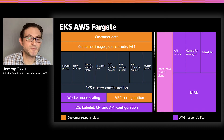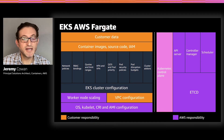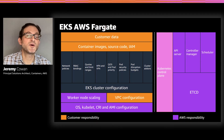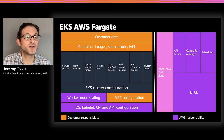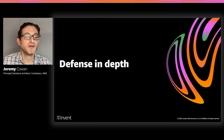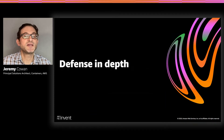With Fargate, the concept of a node is abstracted away, and AWS becomes responsible for managing and scaling the infrastructure to run your containerized applications. Now that we've looked at the shared responsibility model, let's quickly look at defense in depth — the idea of having multiple layers of protection within your environment.